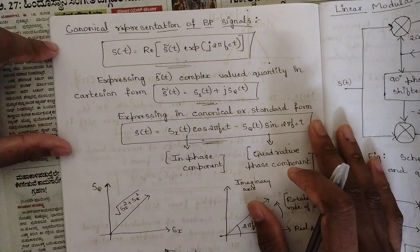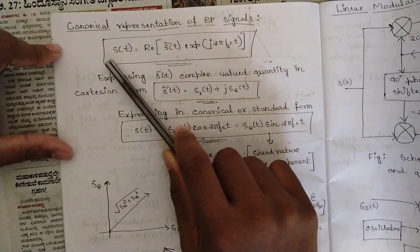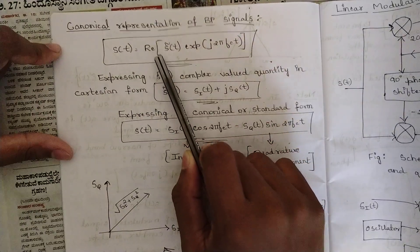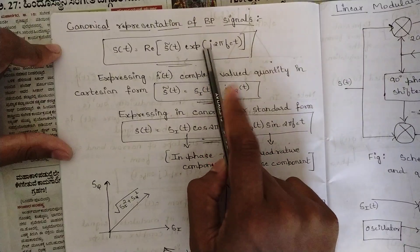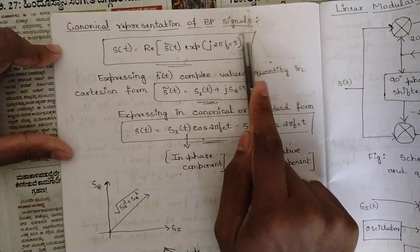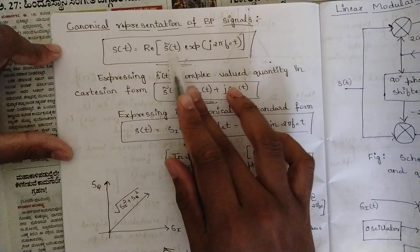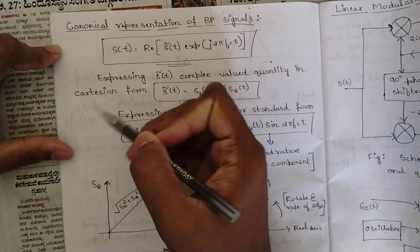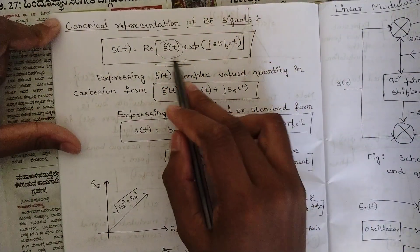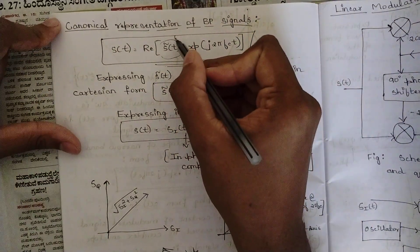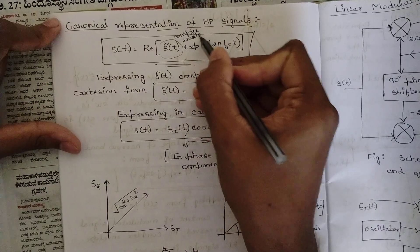Let us discuss the canonical representation of band pass signals. We know that as per the equation, s(t) equals the magnitude of s(t) into e to the power j2π f_c t. This is the equation where s-cap(t) is present, and s-cap(t) represents the complex envelope.